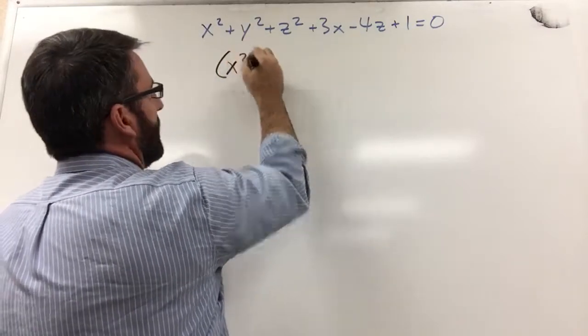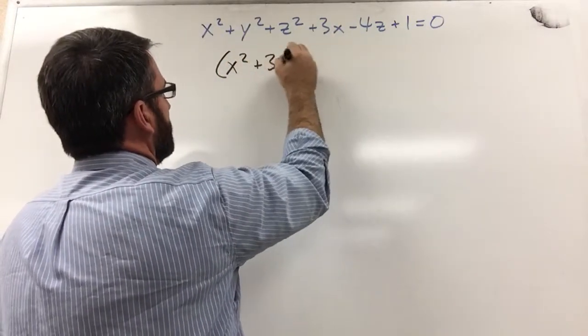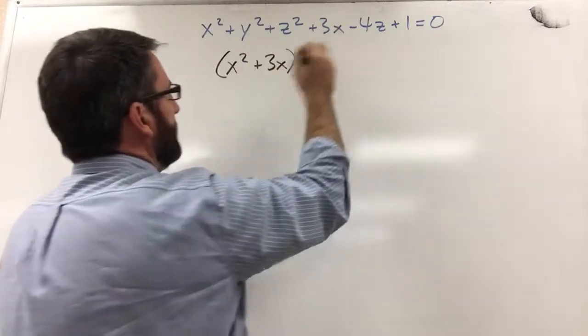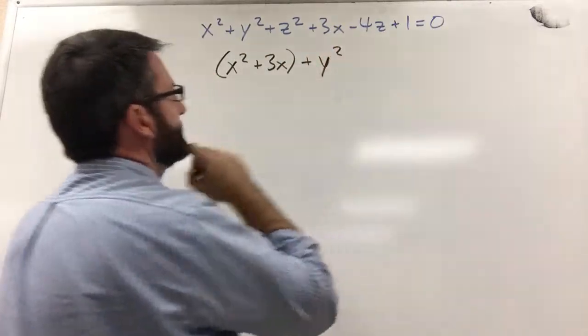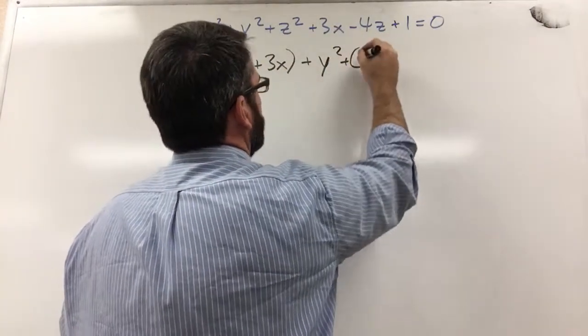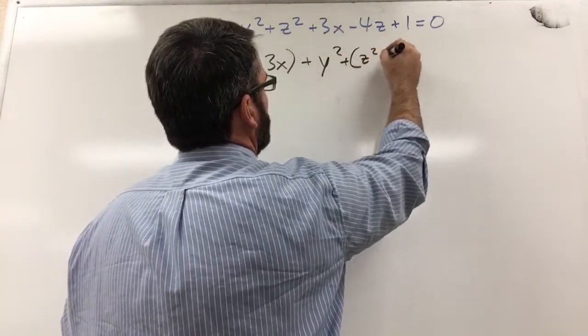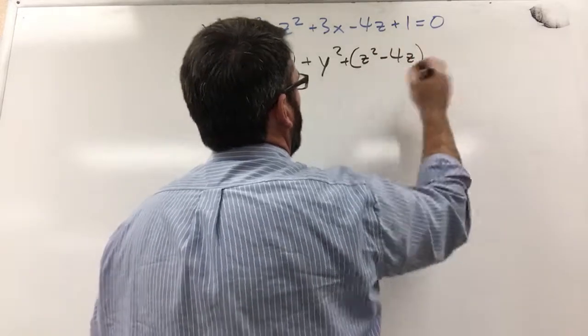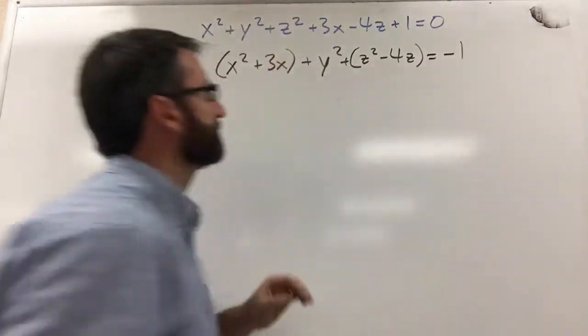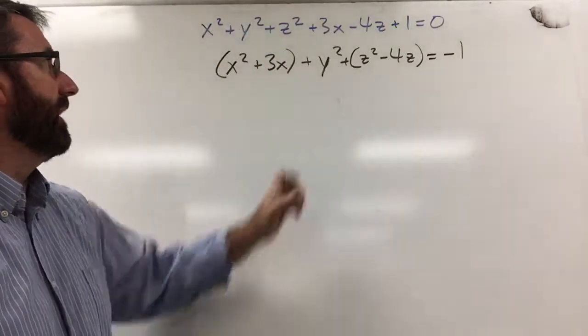We're going to have x squared plus 3x. And then we don't have a y term, so this is just y squared by itself. And then we've got plus z squared minus 4z. Let's go ahead and get that 1 over to the other side. So this is negative 1.